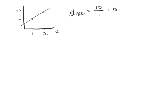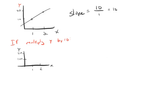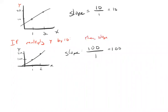Now suppose that I multiply the y variable by 10. So we've still got x equal to 1 and 2, but now y is 100 and 200. What happens to the slope? Well, instead of 20 minus 10, I have 200 minus 100. In other words, the slope has been multiplied by 10. So if you multiply y by 10, then the slope is multiplied by 10.